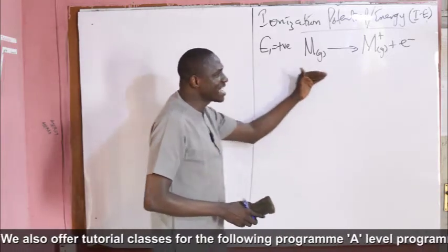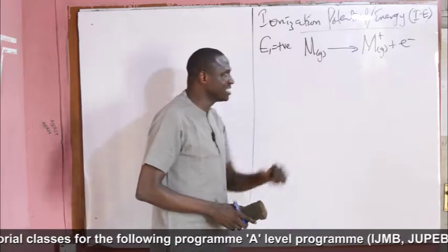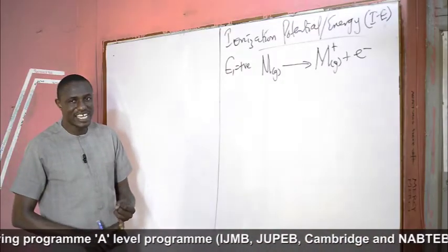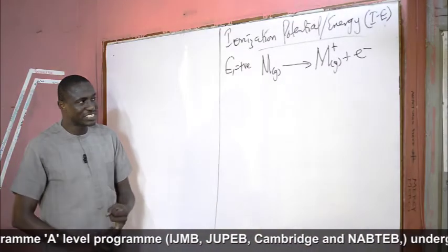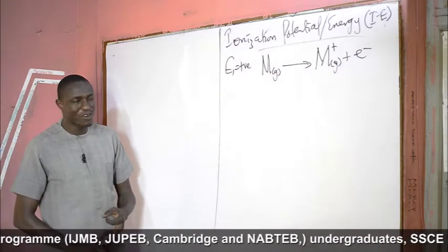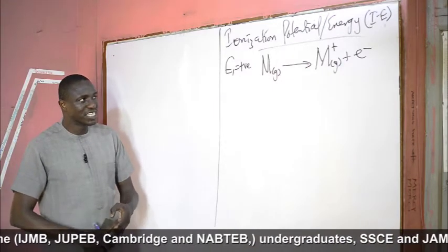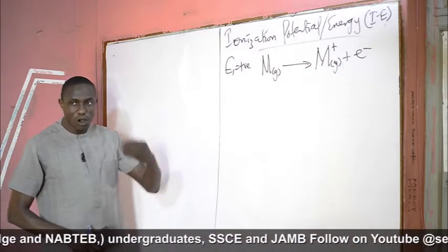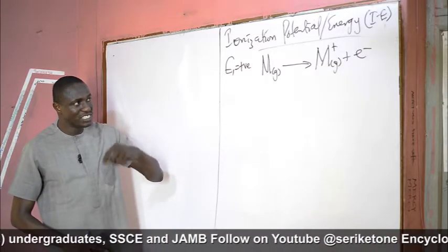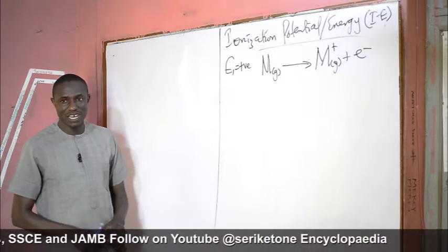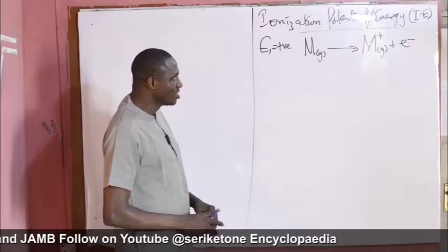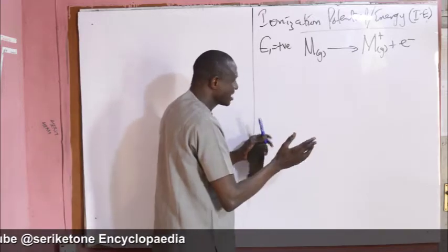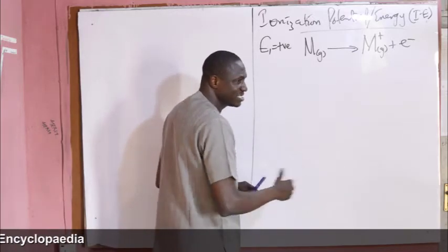The reason for that are the factors I discussed in the last episode: nuclear charge, the screening effect, the size of the atom, the position and number of electrons in the atom, as well as the orbital holding the electrons. So across the period, generally, ionization energy increases.